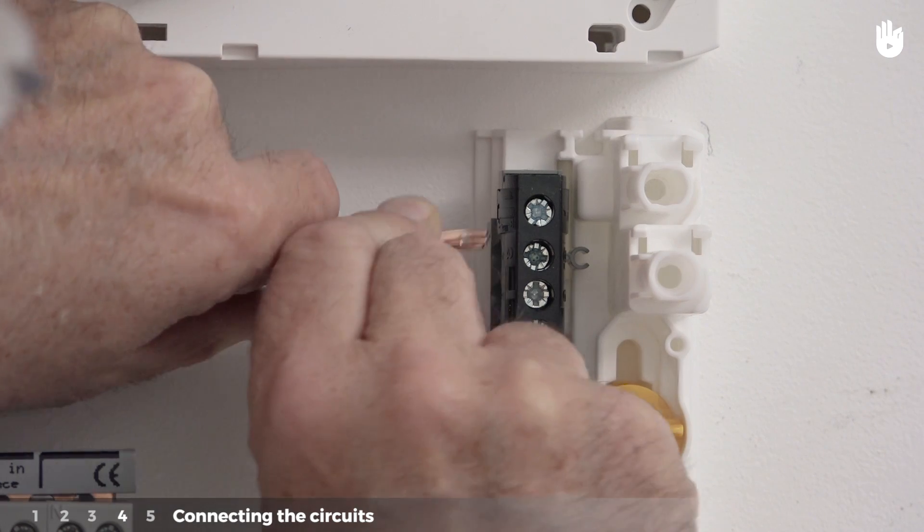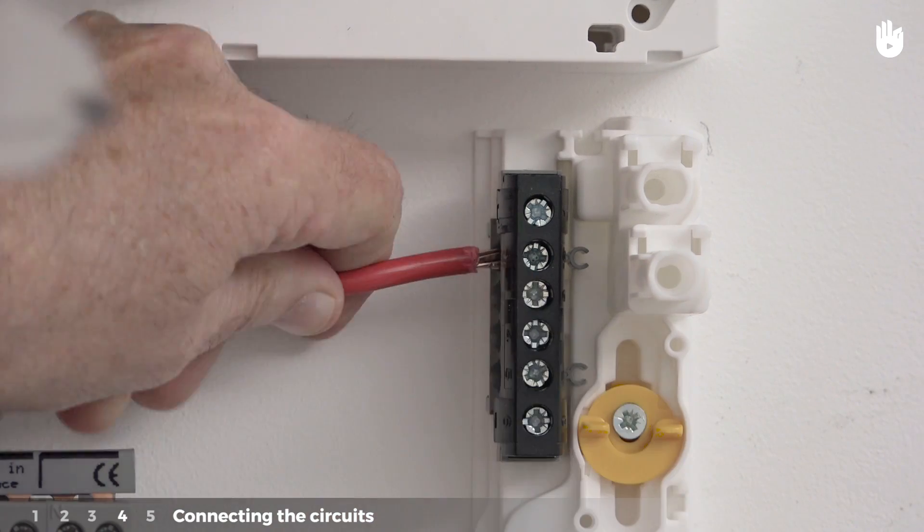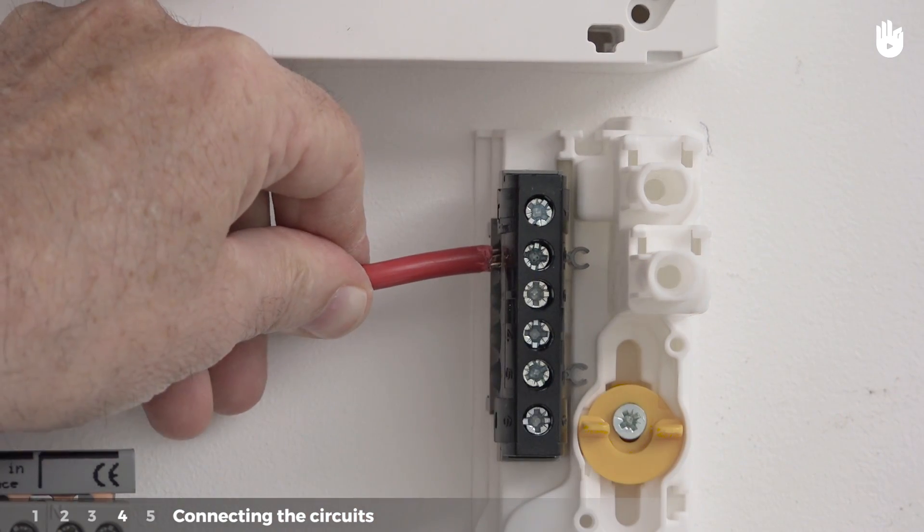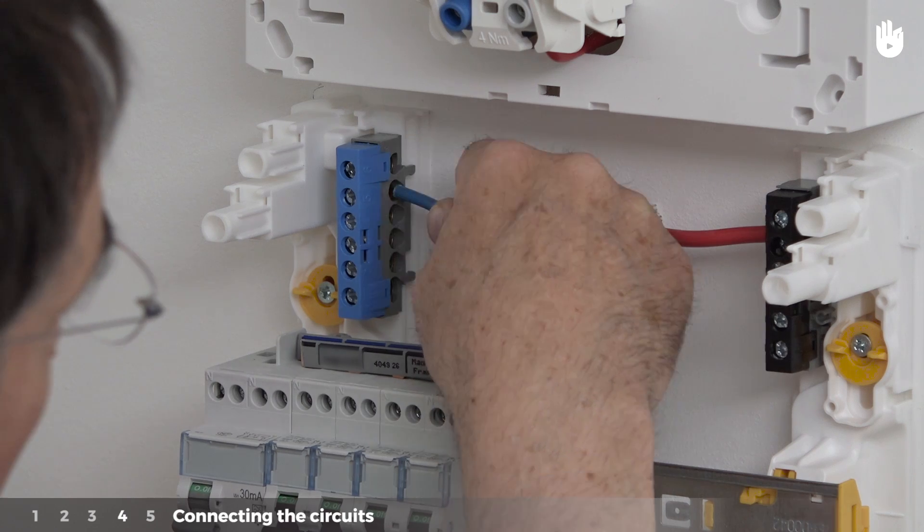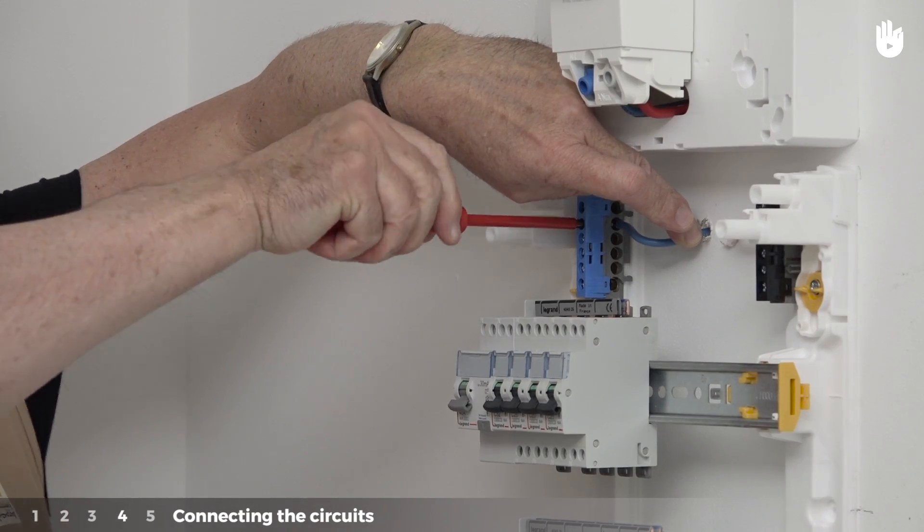Place the neutral and phase conductors in the terminals, which will have first been unscrewed, with the phase red on the right and the neutral blue on the left. Tighten the screws for the terminal block.